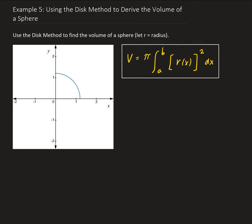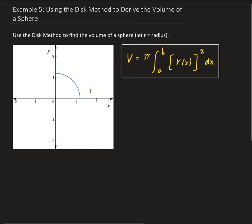In this example, we want to use the disk method to find the volume of a sphere, and we're going to let R be the radius of that sphere. We have this piece of the quarter circle, and if we take the region bounded by this piece of the quarter circle, the y-axis and the x-axis, and rotate that around the x-axis, then we'll get half a sphere. We can calculate that with our volume formula and then double the result to get the whole sphere.